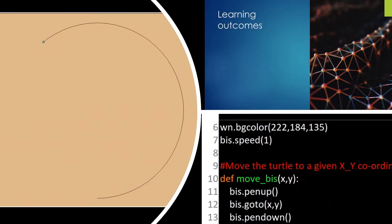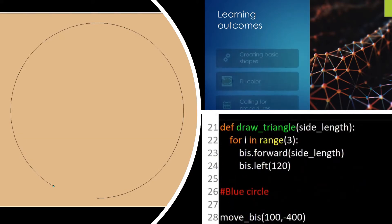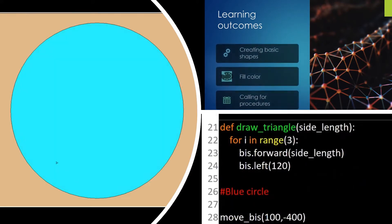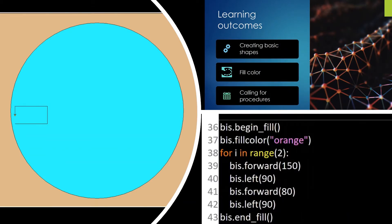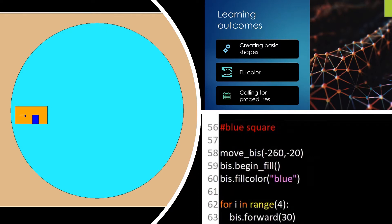Then the orange rectangle, and slowly we move ahead to the blue rectangle, the doors, and then the blue square. And that is the window.